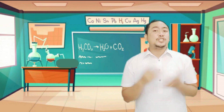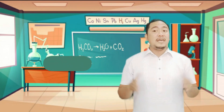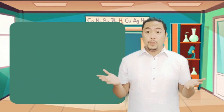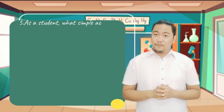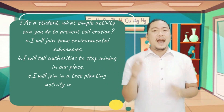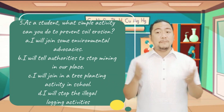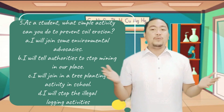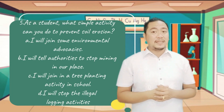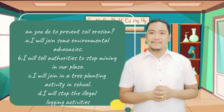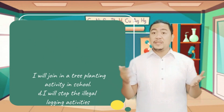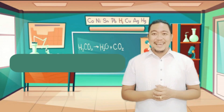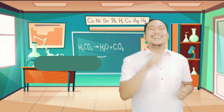Number 5. As a student, what simple activity can you do to prevent soil erosion? A. I will join some environmental advocacies. B. I will tell authorities to stop mining in our place. C. I will join in a tree planting activity in our school. D. I will stop the illegal logging activities. And the answer is letter C. Great job learners!